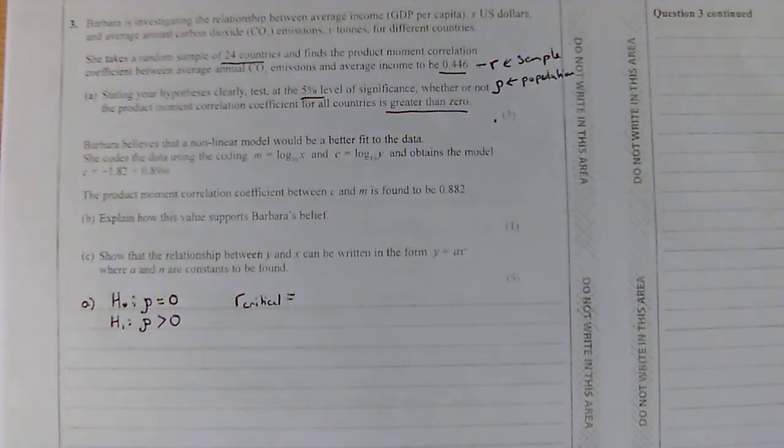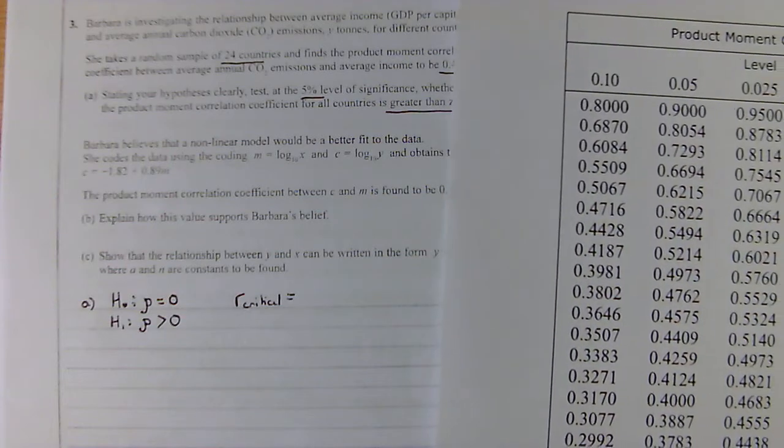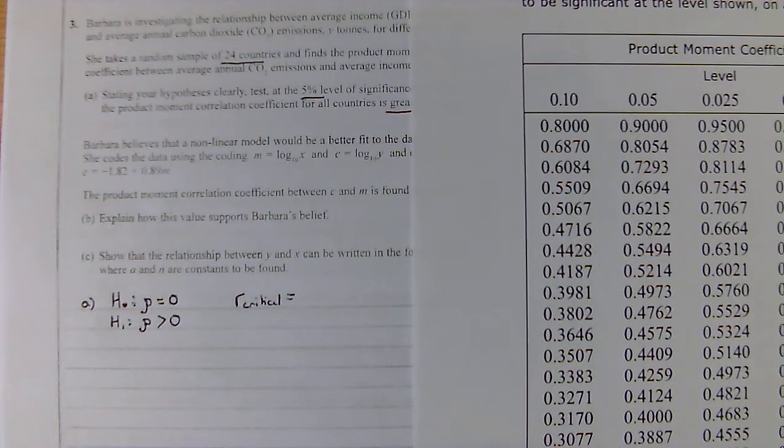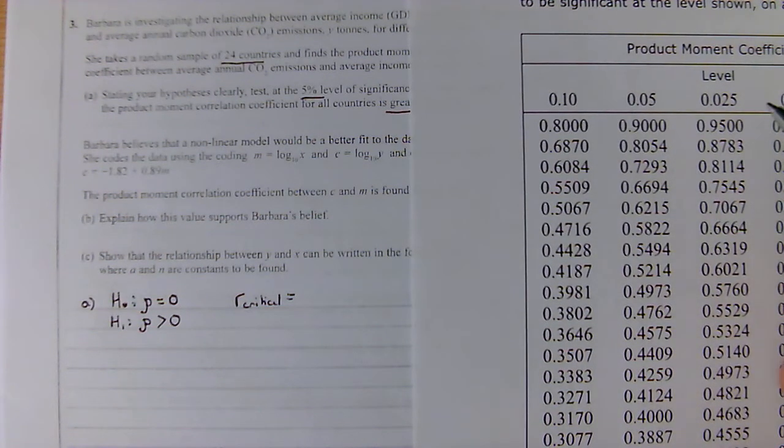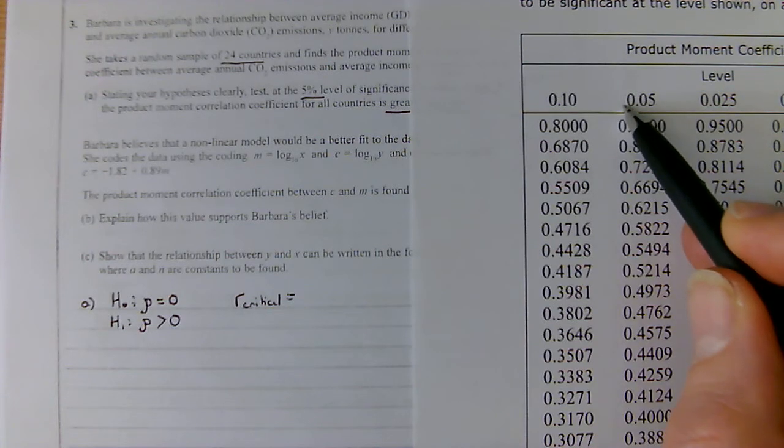If you're only doing A-level, you're not doing further maths, ignore the right-hand side, which is the Spearman's correlation coefficient, and we're going to have a look here for where we're trying to look. Now, we know we're 5%, so we're 5%, which is up here. So we're looking in this column here.